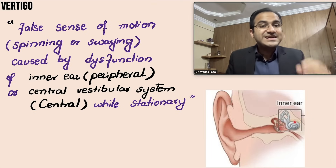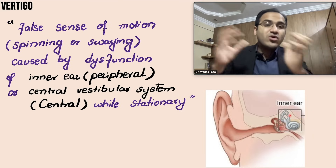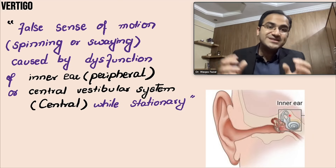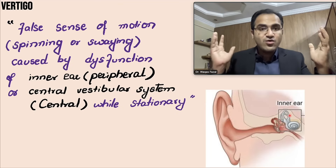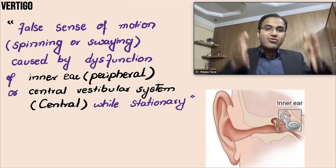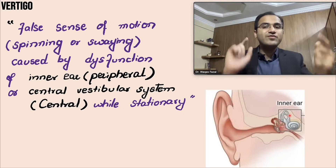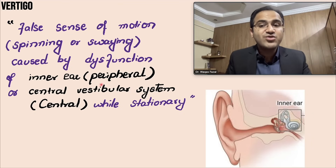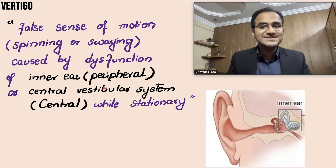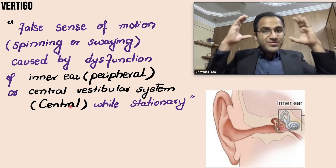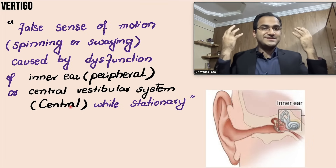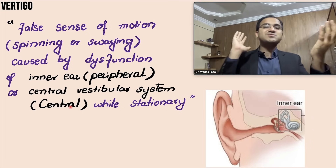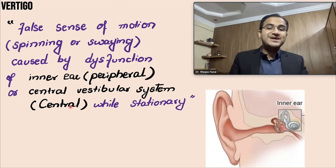If there is any problem with the inner ear and it starts sending wrong signals to the brain — telling the brain that the person is in motion while the person is at rest — that causes a sensation of vertigo. The brain gets confused because the body is at rest but the brain thinks things are moving. If the problem is with the inner ear, that is called peripheral vertigo.